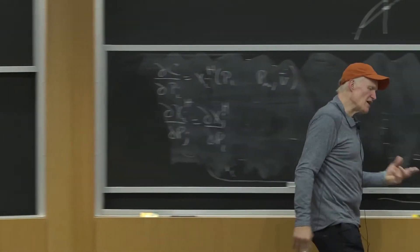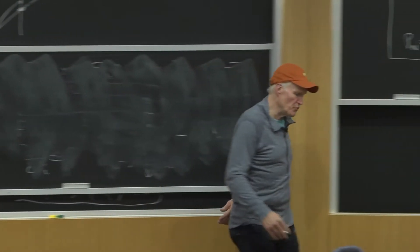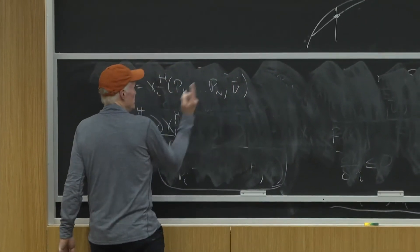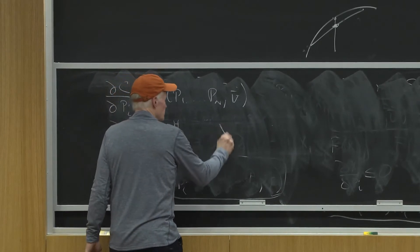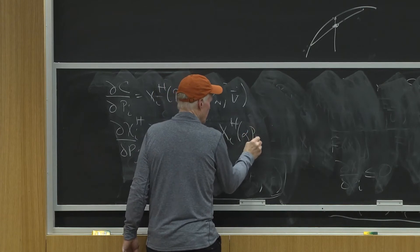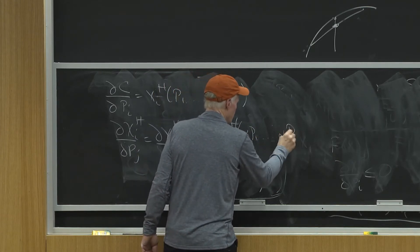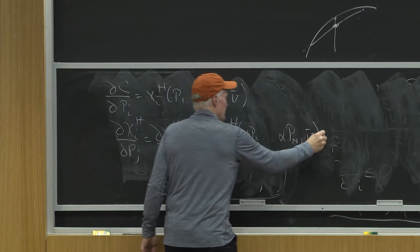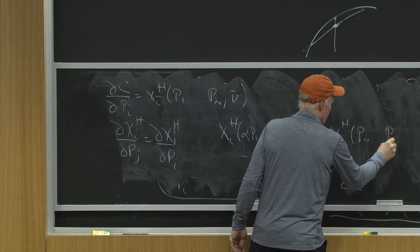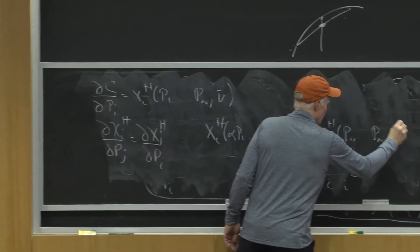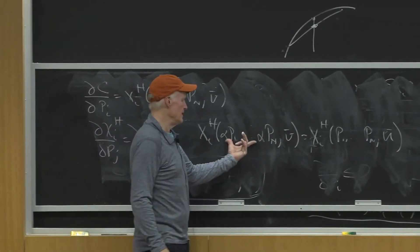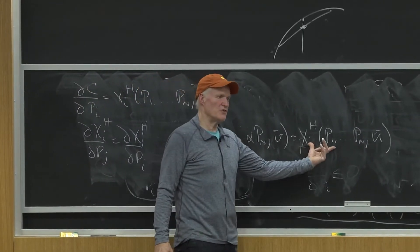We had our result that the cost function was homogeneous of degree one. That tells us that the demand functions have to be homogeneous of degree zero. So XIH of alpha P1 up to alpha PNU bar equals XIH of P1 up to PNU bar. So if I multiply all the prices by the same constant, it does nothing to change your optimal choice.